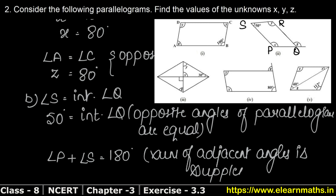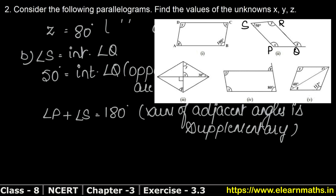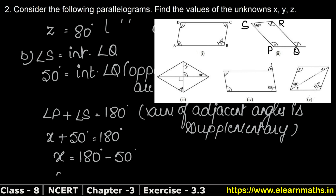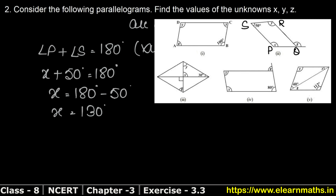Sum of adjacent angles is supplementary, meaning 180 degrees. So angle P is 50 degrees, therefore 50 plus x equals 180 degrees, giving x equals 130 degrees.